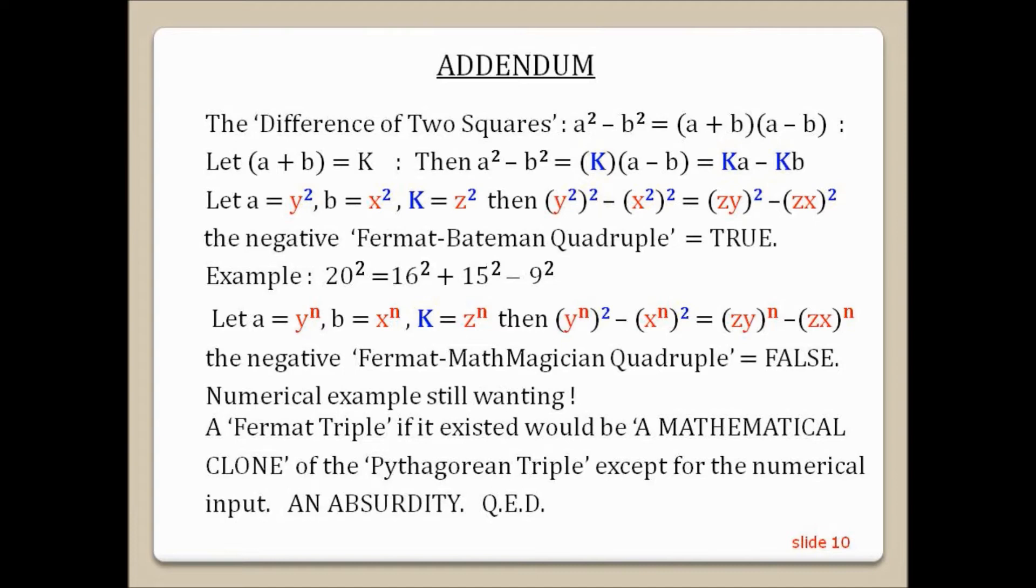Numerical example still wanted. A Fermat triple, if it existed, would be a mathematical clone of the Pythagorean triple, except for all the numerical input and absurdity. QED.